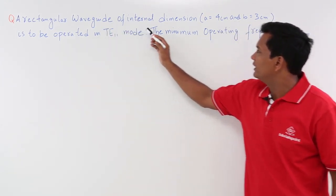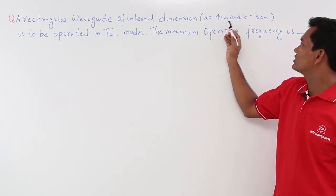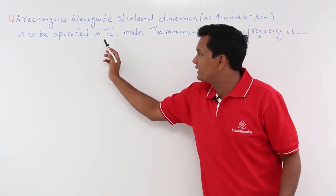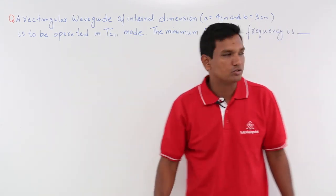A rectangular waveguide of internal dimension A equal to 4 centimeter and B equal to 3 centimeter is operated in TE11 mode.